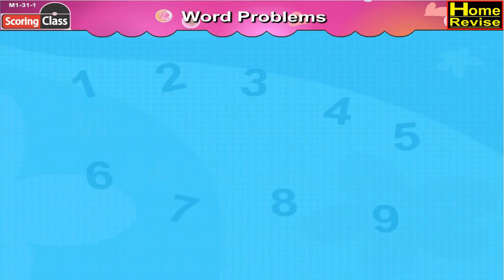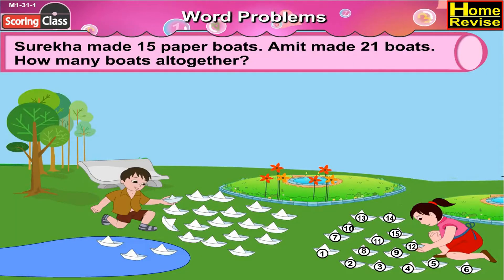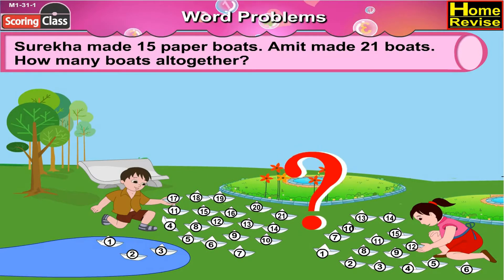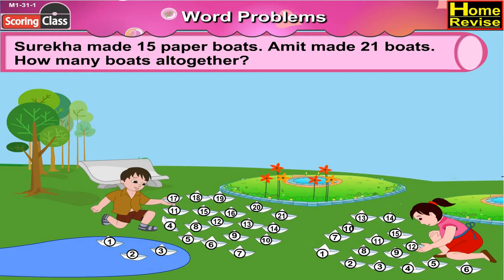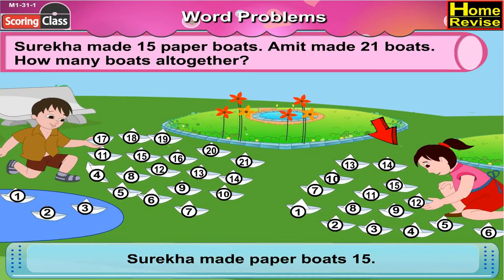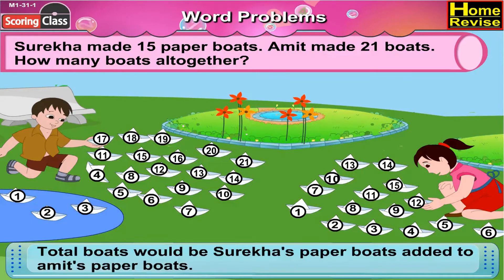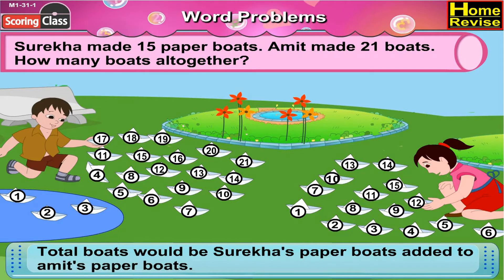Surekha made 15 paper boats. Amit made 21 boats. How many boats altogether? Surekha made paper boats: 15. Amit made paper boats: 21. Total boats would be Surekha's paper boats added to Amit's paper boats.